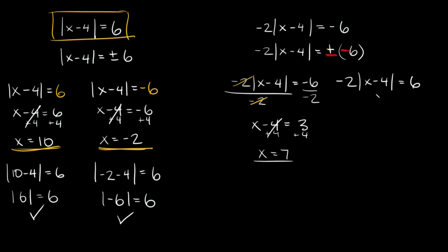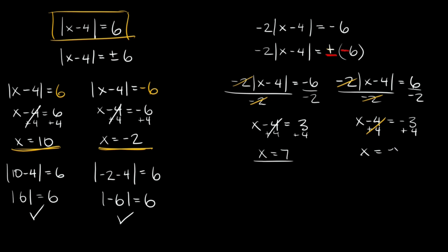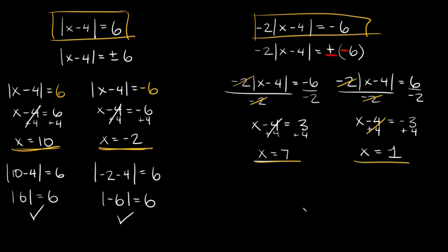For the second equation, we do the same thing — divide both sides by negative 2. The negative 2s cancel, leaving x minus 4 equals 6 divided by negative 2, which is negative 3. Adding 4 to both sides, x equals negative 3 plus 4, which equals positive 1. So our two answers are x equals 7 and x equals 1.